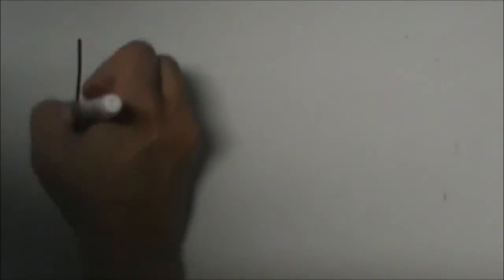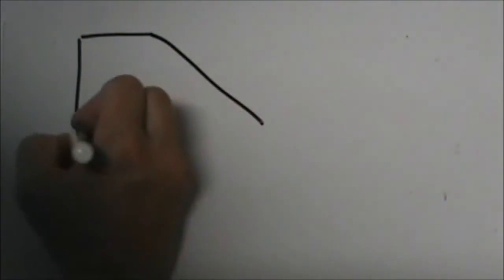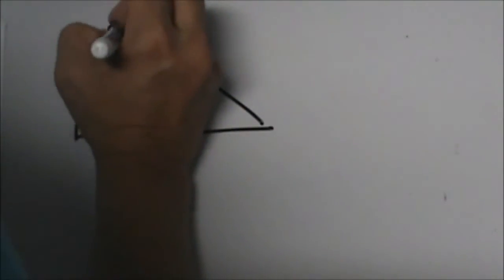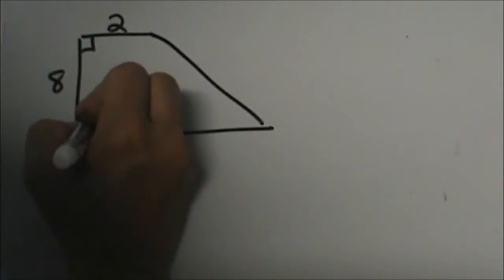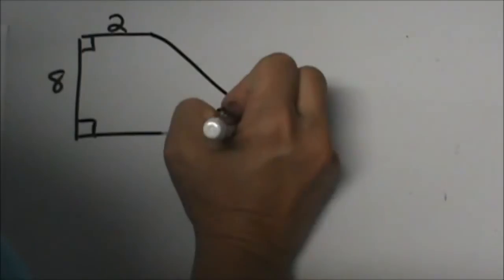Let me sketch it up here. Why are we doing a trapezoid problem in the middle of a triangle unit? I will show you why.